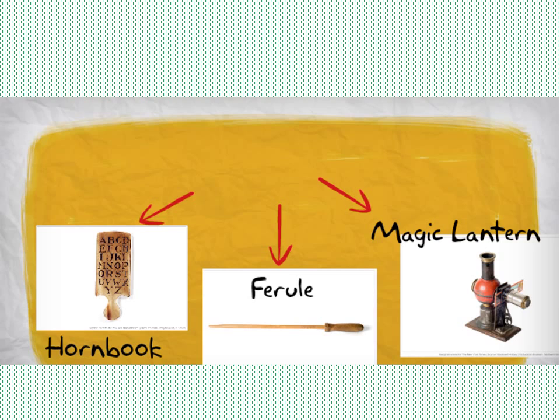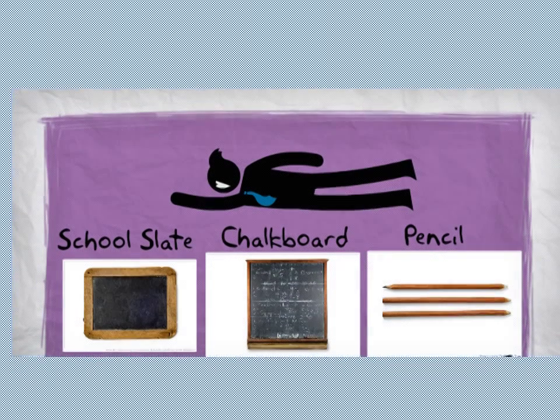Shortly after was the magic lantern, which projected images onto glass plates so students could refer to images while learning. In 1890, the school slate was invented and used in most classrooms.